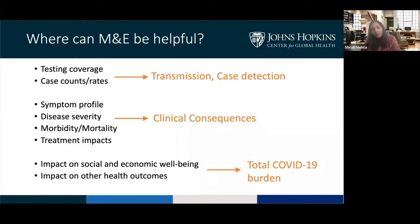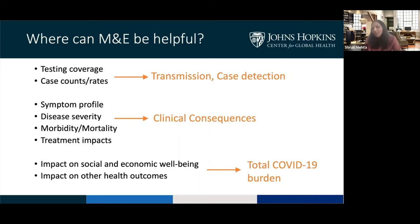There are really three key areas to capture information. The first is transmission and case detection — not just case counts, but incorporating testing coverage: not just how many tests, but who's being tested, to calculate rates per different types of populations. The second domain is clinical consequences — capturing outcomes but also changing symptom profiles, which has implications for how we target testing.